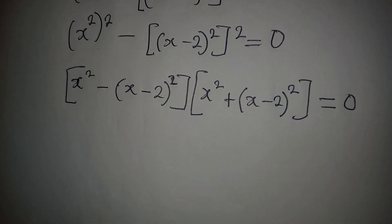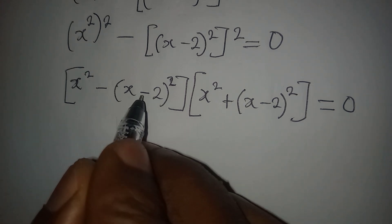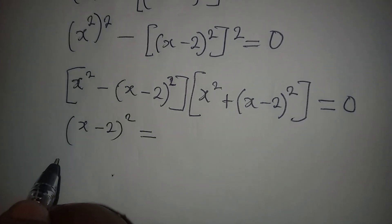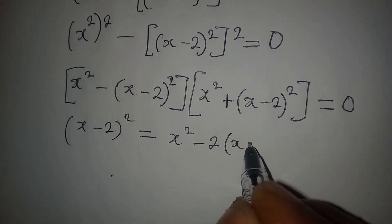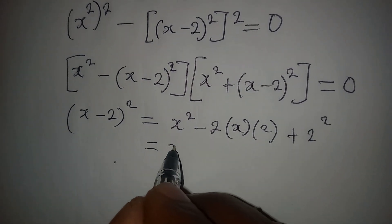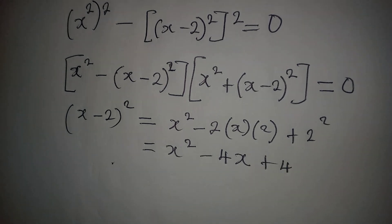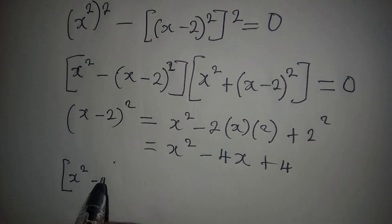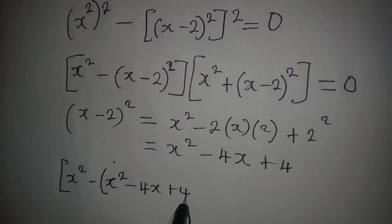The next step is to deal with the inner bracket. For x minus 2 squared, this is going to be the same thing as x squared minus 2 multiplied by x multiplied by 2, then plus 2 squared. So this gives us x squared minus 4x plus 4. The first bracket now will have x squared minus open bracket x squared minus 4x plus 4.